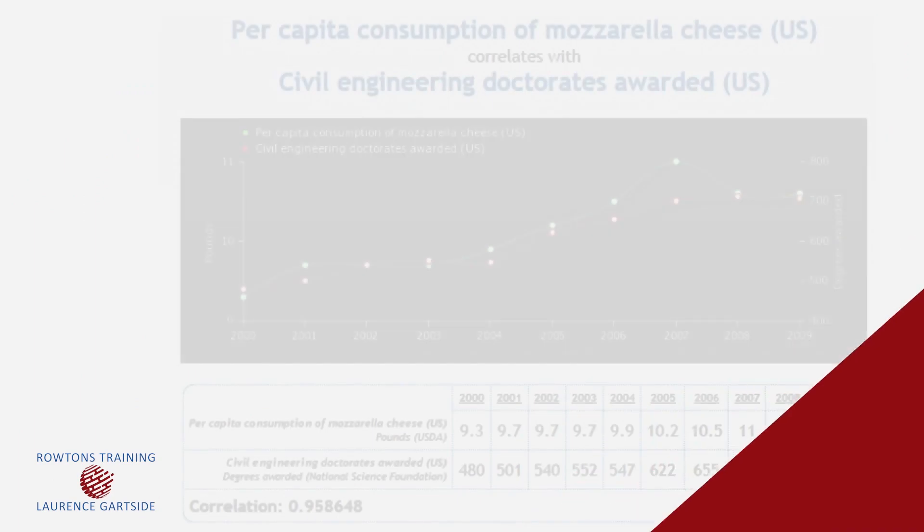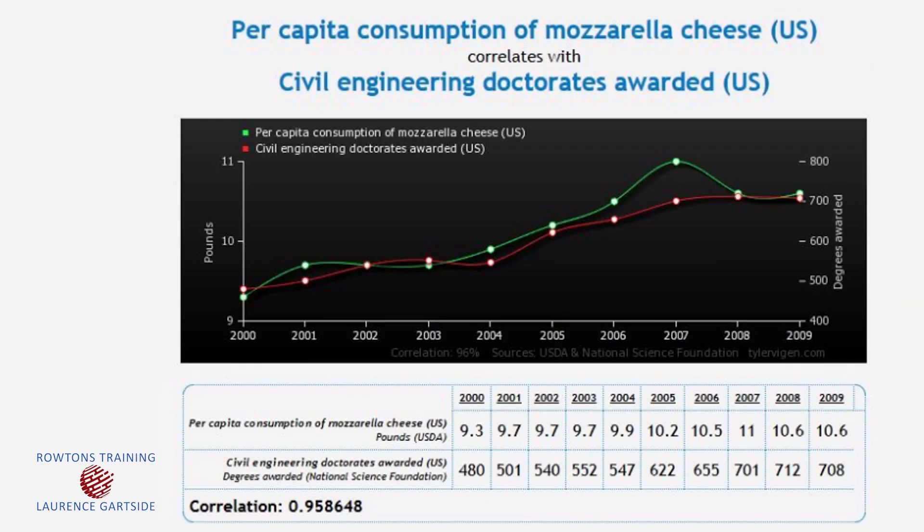As a silly example of random things that have been found to happen to be correlated but clearly are not caused by each other, someone once found that the plot of the per-person consumption of mozzarella cheese in the United States every year, going back over a decade, happened to correlate extremely well with the number of engineering doctorate degrees awarded. Fascinating. But here, in such a silly example, I think we can see that there's no causation between the two, but they are very well correlated over that time period.